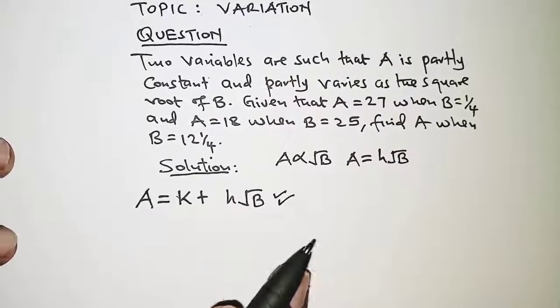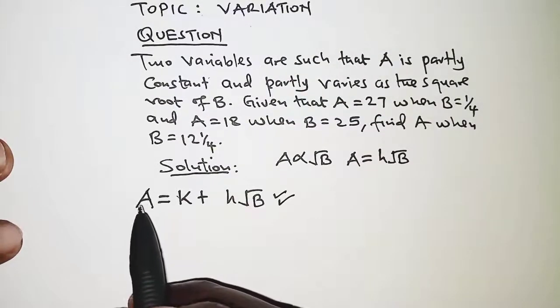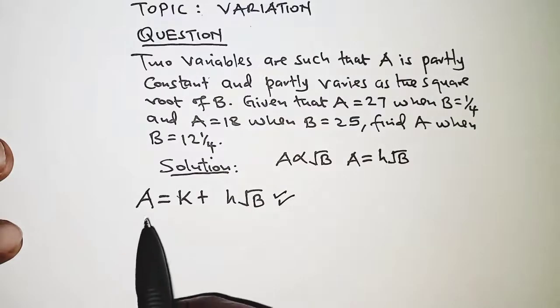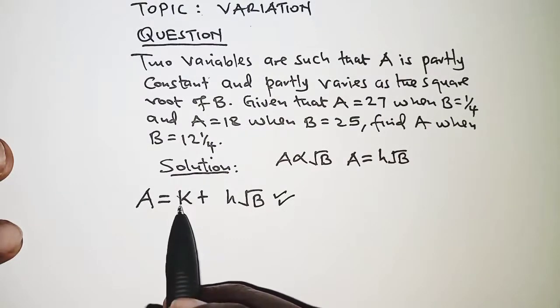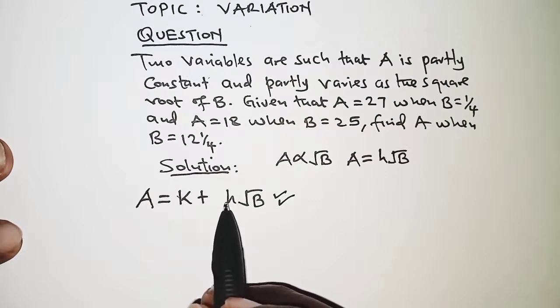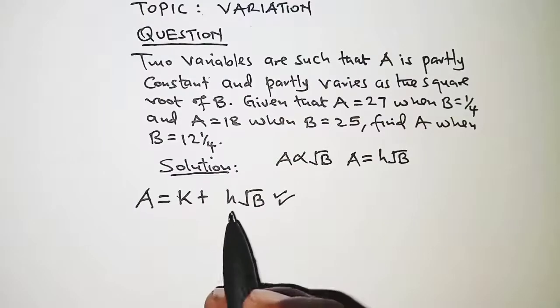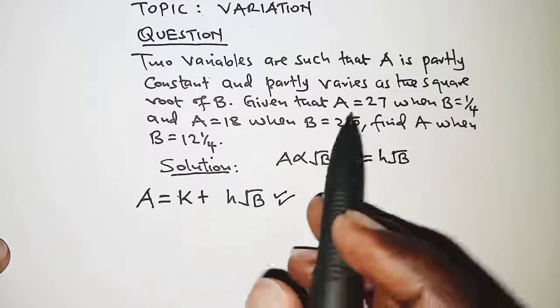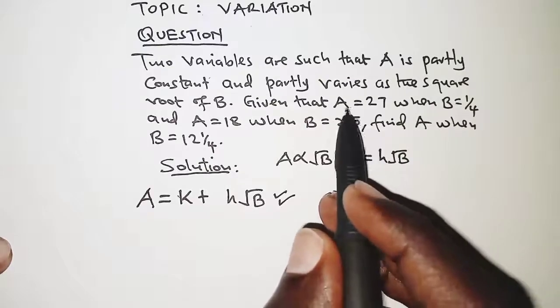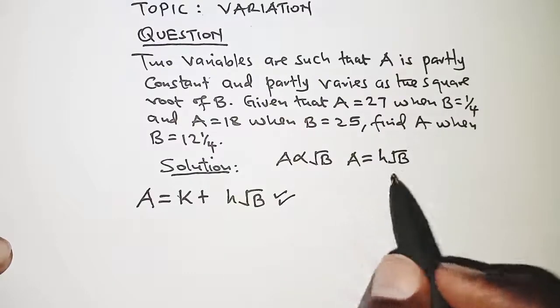First of all we need to get the relationship between A and B by simply getting the actual values of k and h, that is the constants.